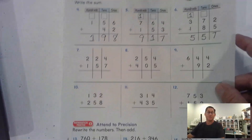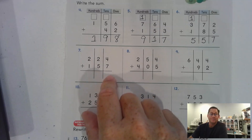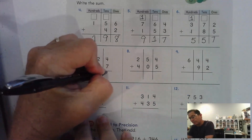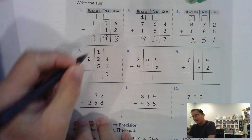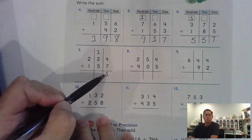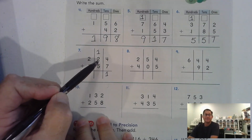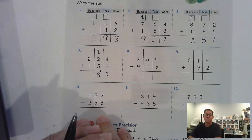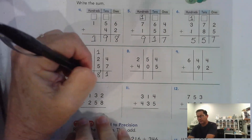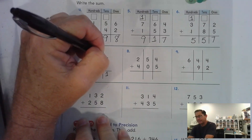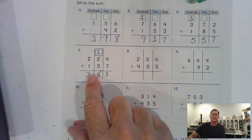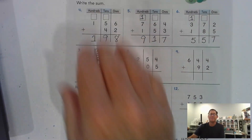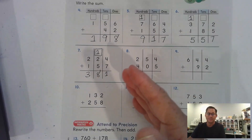Add the hundreds: three plus one is four, plus the regrouped hundred is five hundred. Number seven: we're going to have to regroup the ones. Seven and four is eleven ones — we regroup as one ten and one one. Add the tens: five, six, seven, eight — eight tens, no regrouping. Hundreds: two and one is three hundred.